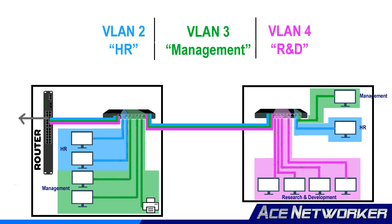Think of it like dividing a switch into pie pieces. You determine that these three or four interfaces on the switch are going to be for the HR group's VLAN — in this example, VLAN 2. You configure VLAN 2 for those ports, and anybody connecting to those ports is assumed to be in VLAN 2. Similarly, VLAN 3 is for your management group, and you configure those ports accordingly.